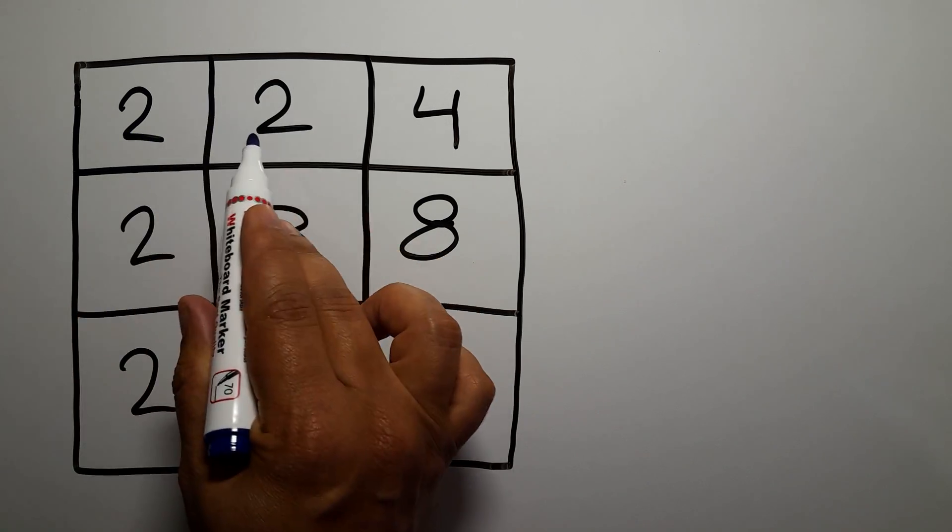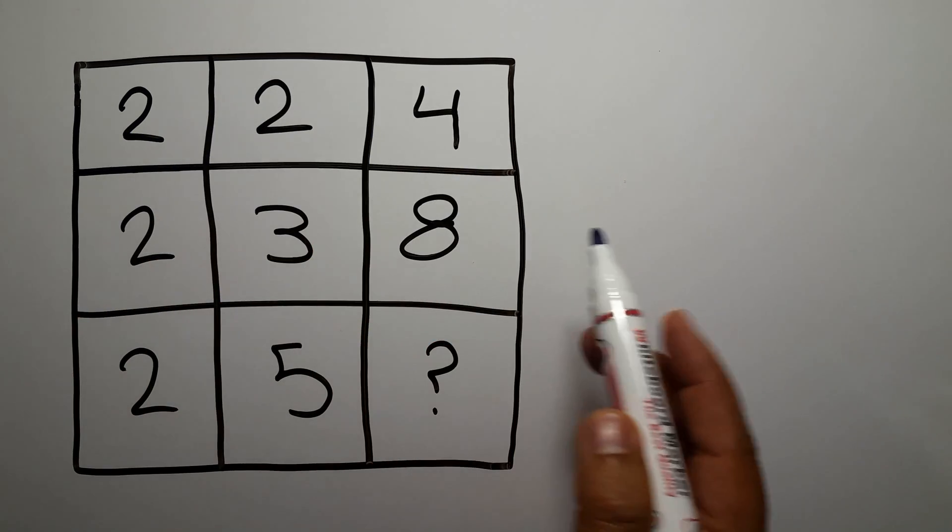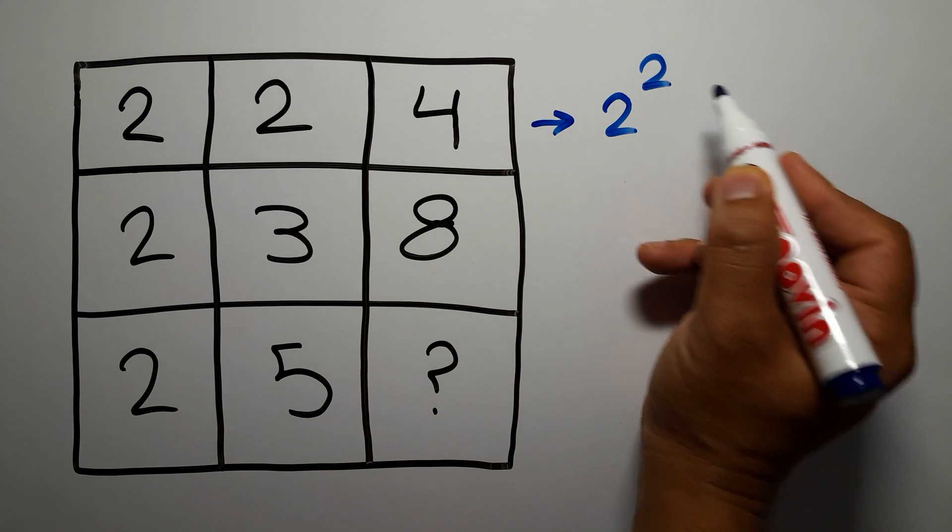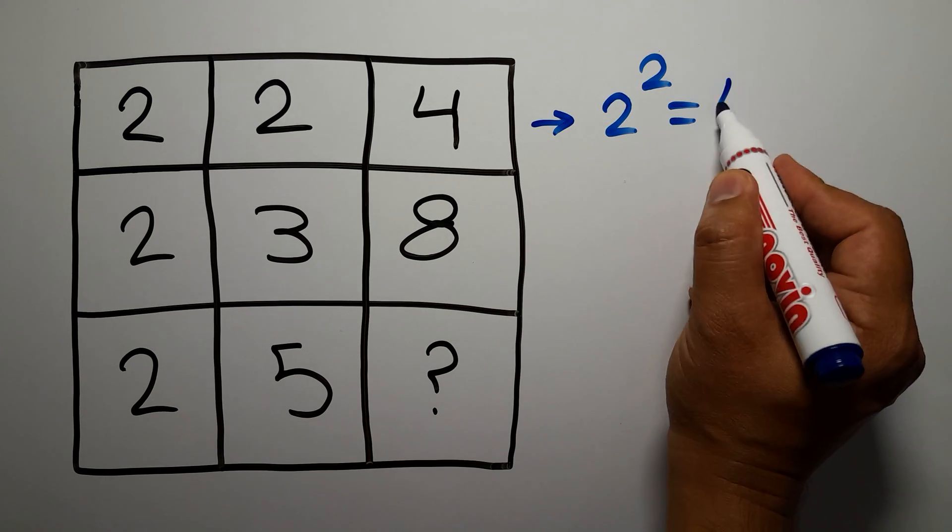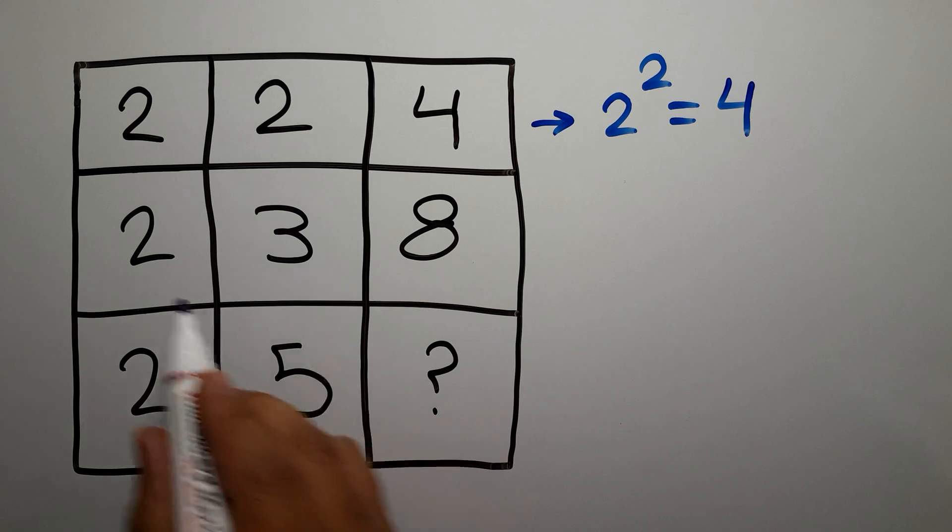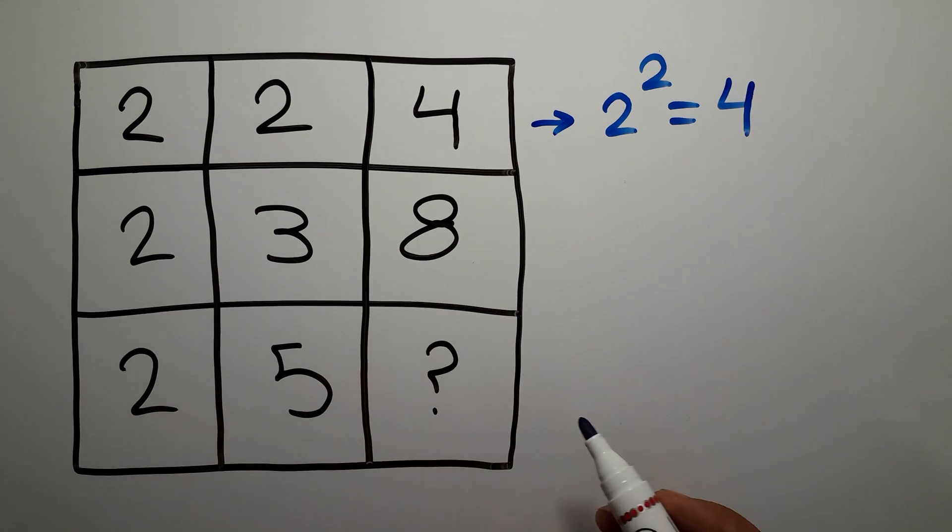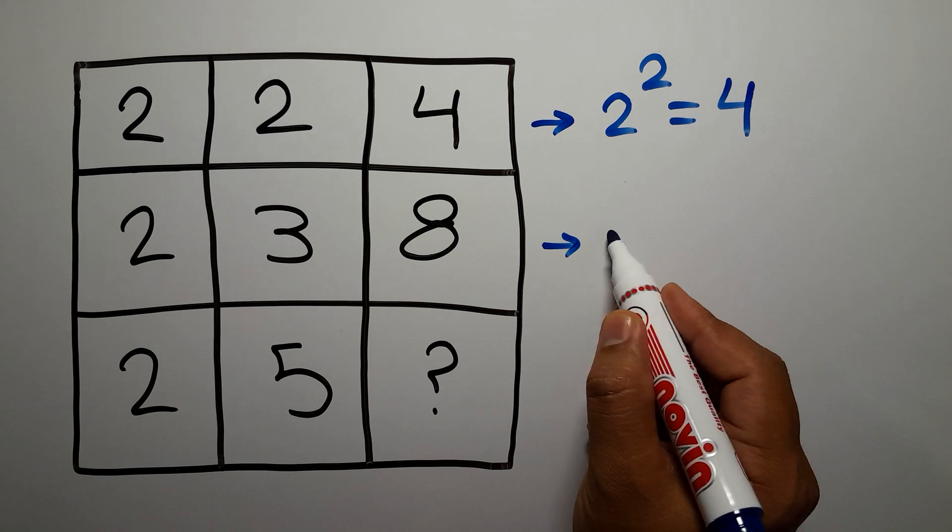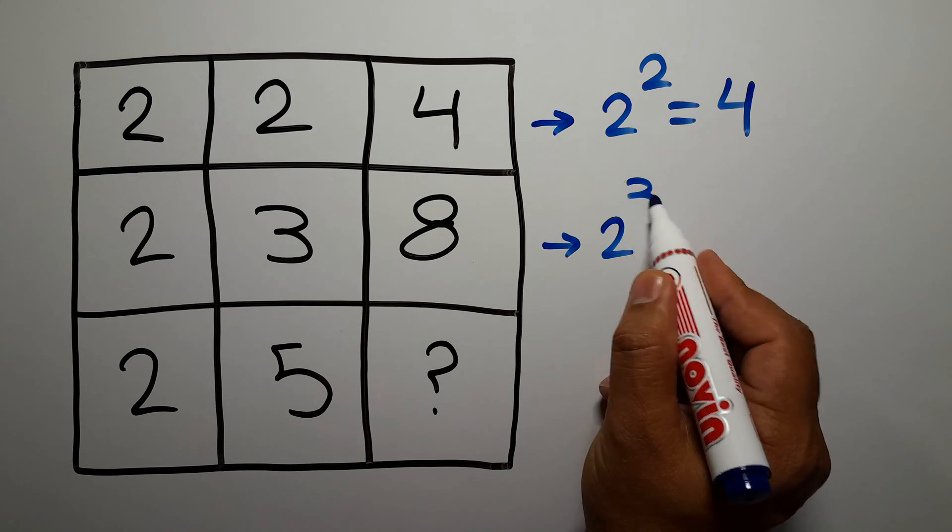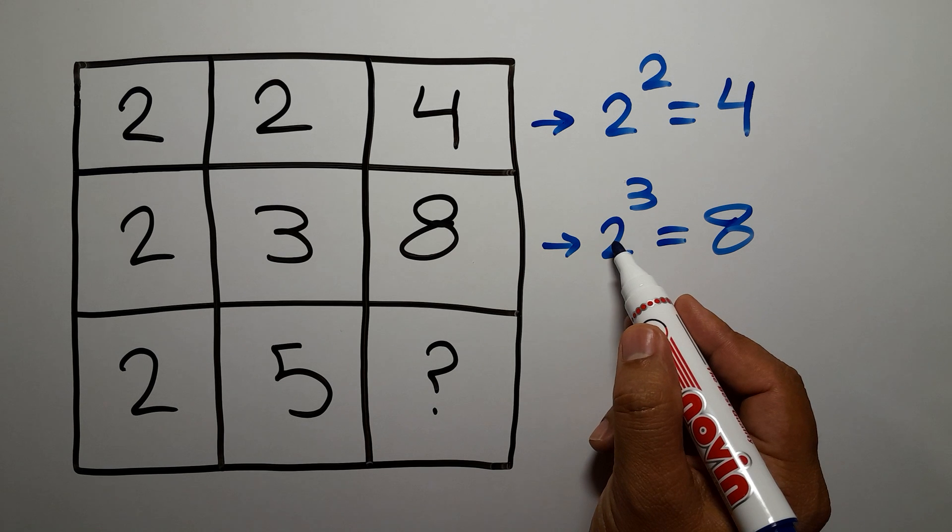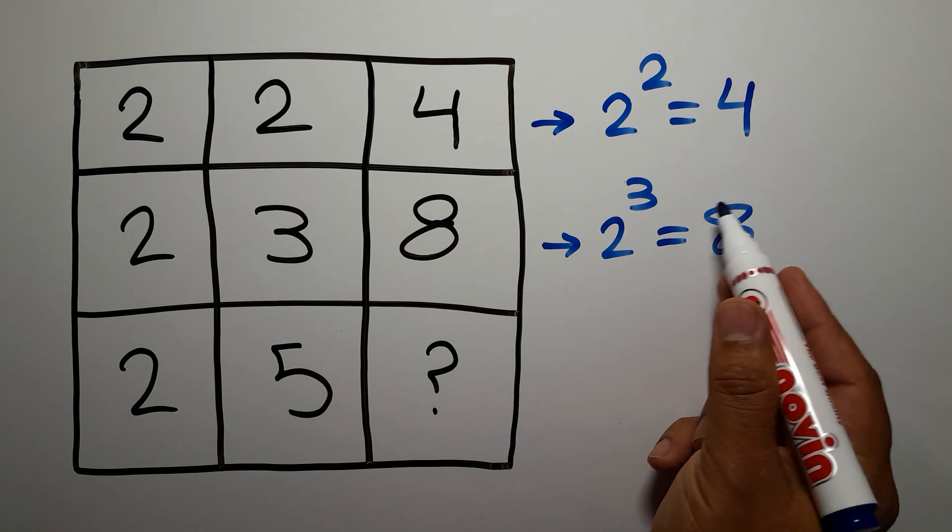2 to the power of 2 gives us 4. 2 to the power of 2 equals 4. In the second row we have 2, 3, and 8. 2 to the power of 3 gives us 8, because 2 cubed equals 8.